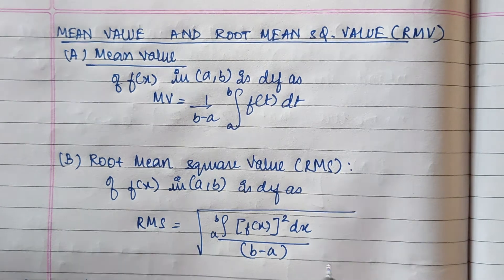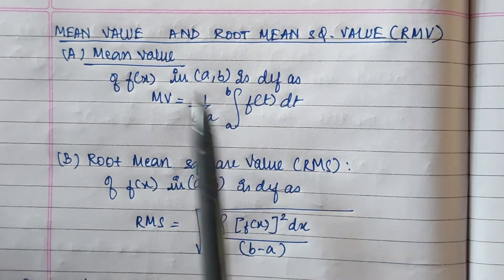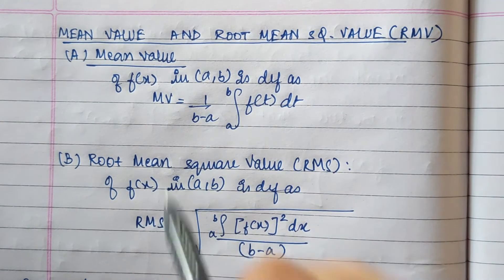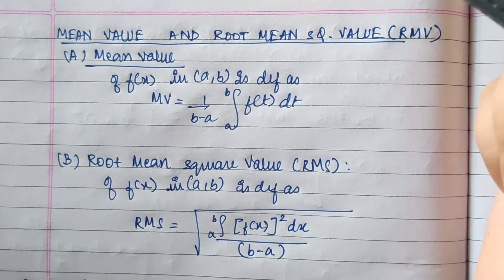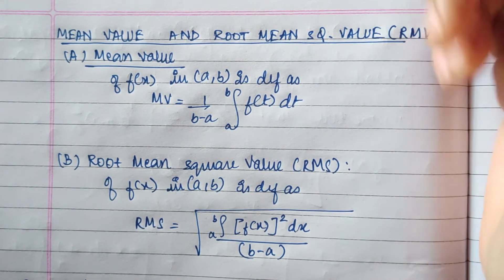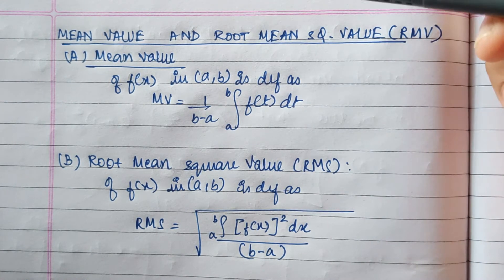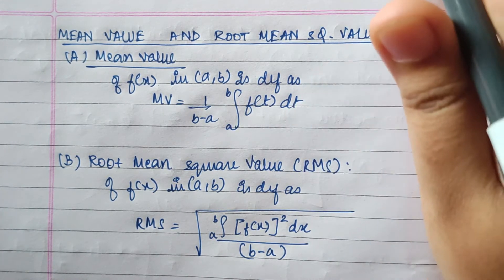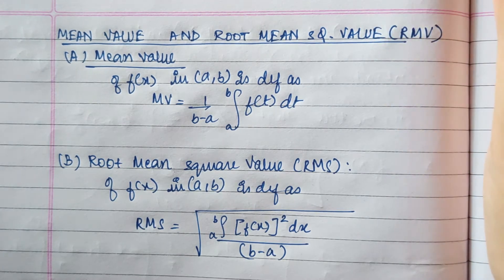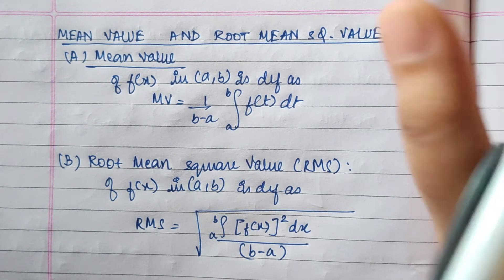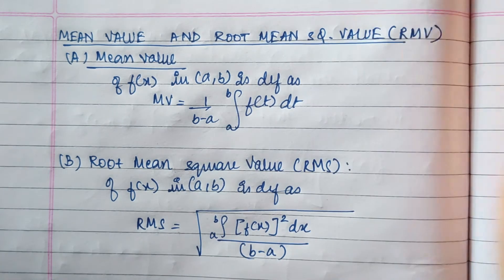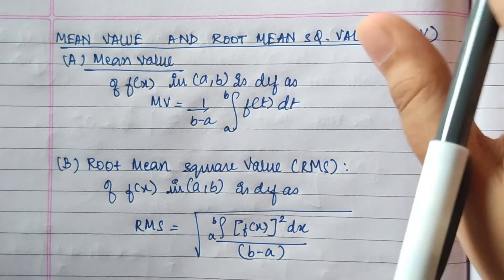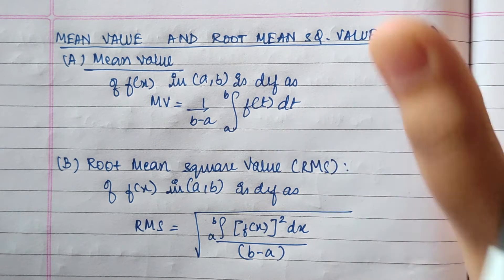The next topic we're going to deal with is the mean value and the root mean square value. This is a very simple and small topic where you just need to know two formulae and apply them into questions. It's very direct and very basic, and that's why some teachers don't give it much importance — some don't even teach this topic.